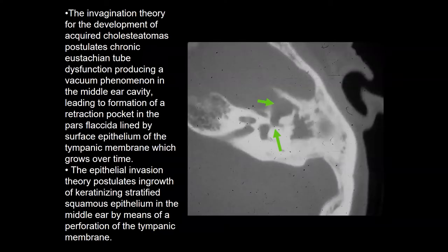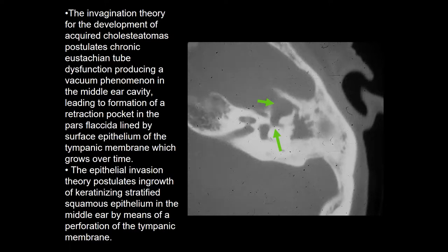There are two different theories about cholesteatoma etiology. The invagination theory states that chronic eustachian tube dysfunction produces a vacuum phenomenon within the middle ear, leading to a retraction pocket of the pars flaccida, and the epithelium grows through this retraction pocket into Prusac space. The epithelial invasion theory postulates ingrowth of keratinized squamous epithelium due to a perforation of the tympanic membrane, originating from the external auditory canal.